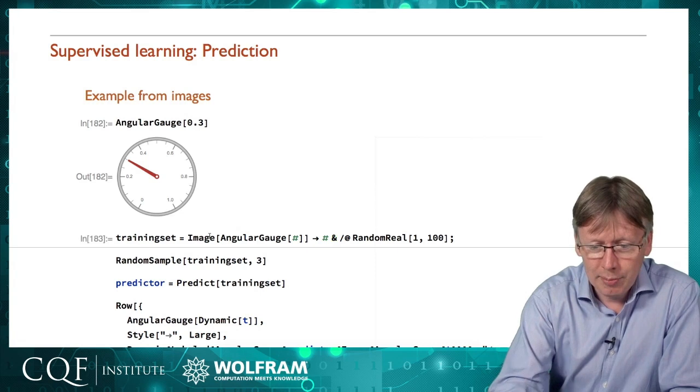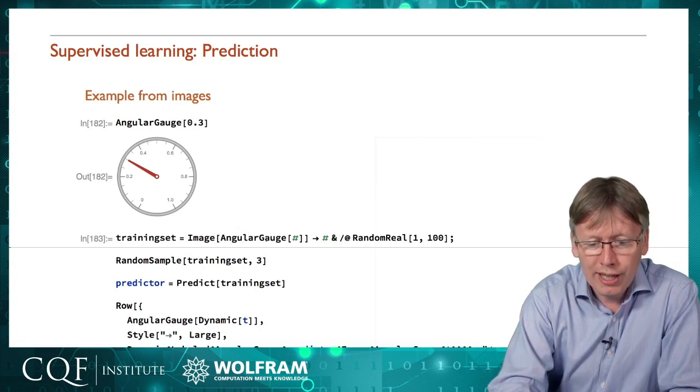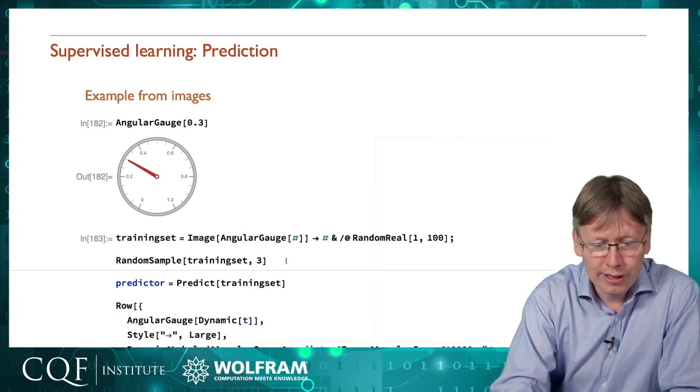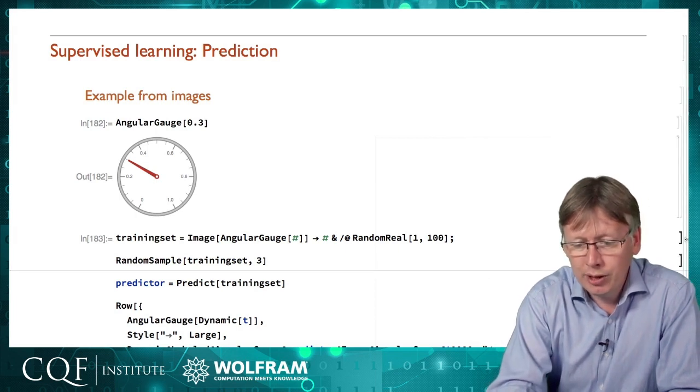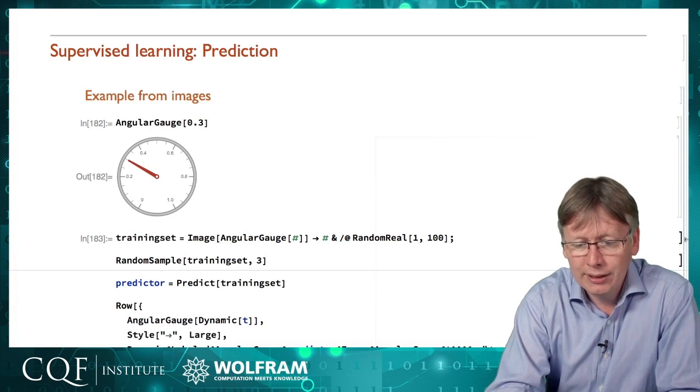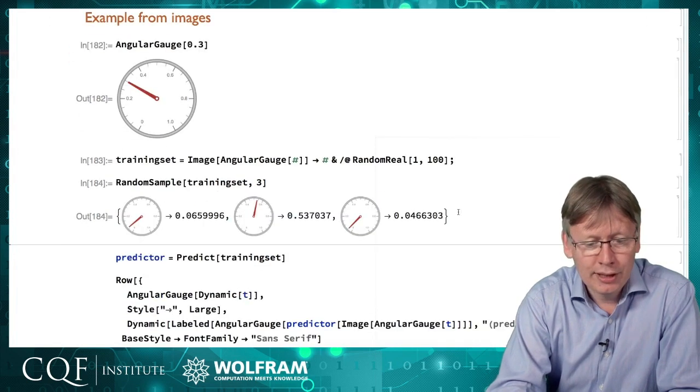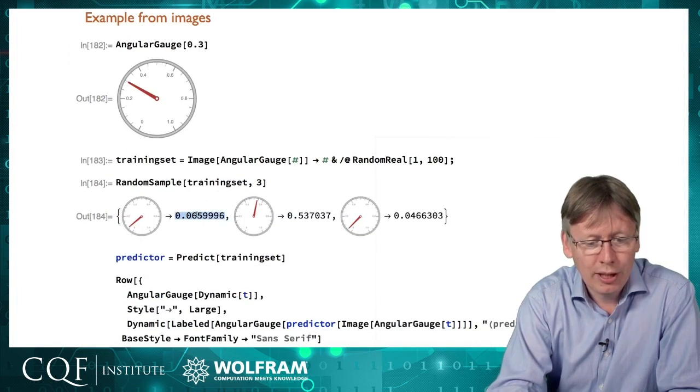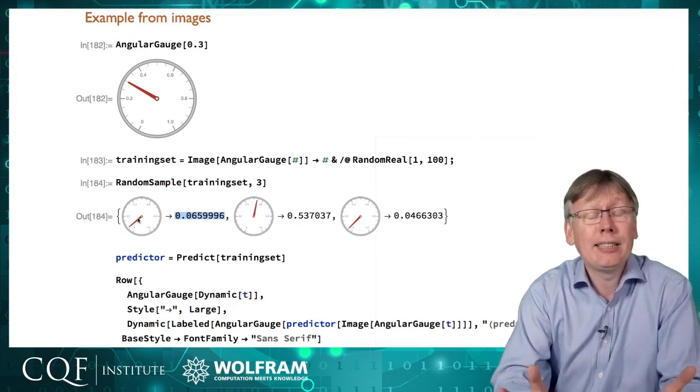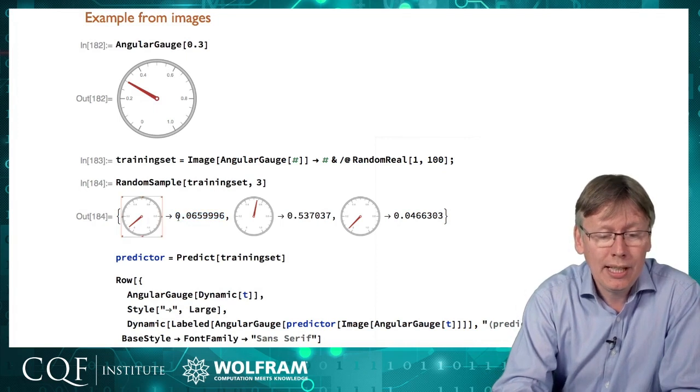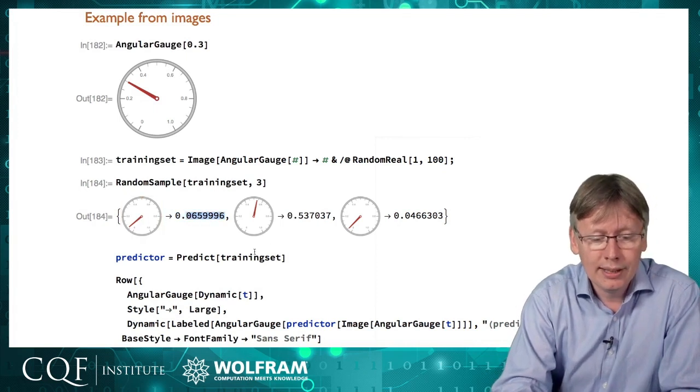Let's make a training set here by making a whole bunch of random angular gauges with their associated value. If we look at three examples from that training set once it's generated all of those pictures, here's three examples. This is the correct value on the gauge and here's what the picture looks like. But this training set is just like all the others we've seen, input and output as a list of data.